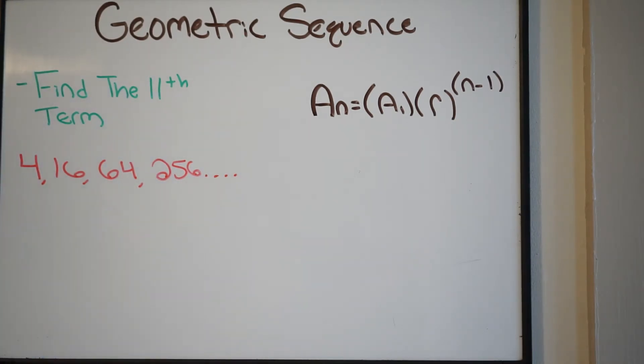Our first step is to find the common ratio between our terms in the sequence. We've talked about how to do this in the past. In this case, we're simply going to start at the second term and divide it by the first term. So if I do 16 divided by 4, that's going to give me 4.